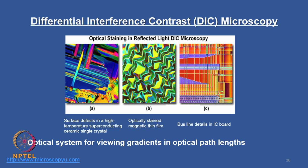Let us see what this microscopy is. I have picked up some classical images from the website microscopyu.com. The first image shows surface defects in a high temperature superconducting ceramic single crystal. You can see the clarity and contrast in the ceramic surface through DIC. Image B is of magnetic thin films and image C is bus line details in an IC board. These are some of the best micrographs one can achieve through DIC.